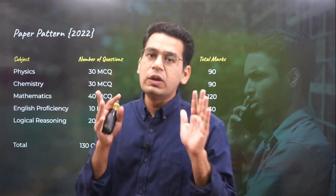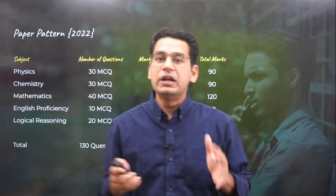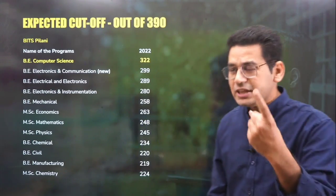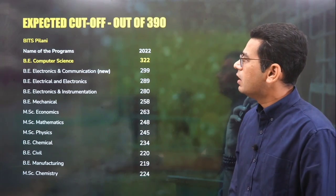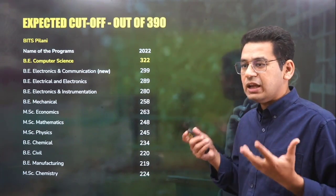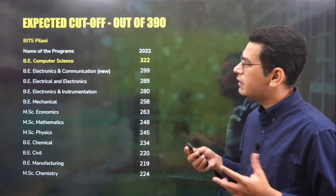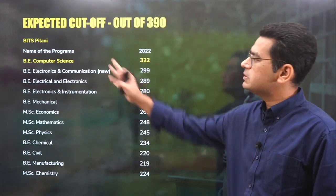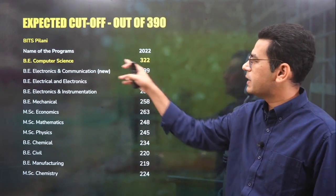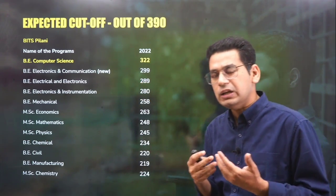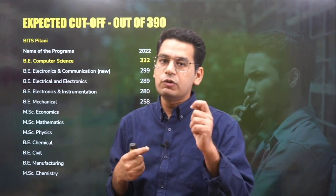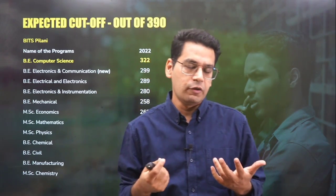Along with it, 12 extra questions are still there. What is the expected cutoff out of those 390 marks? For BITS Pilani campus, if you want a computer science branch, it has to be upward of 322. So expect 325 and above to be the cutoff.